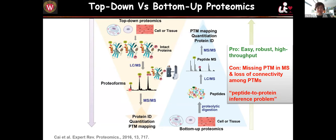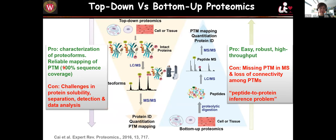In top-down, we analyze all proteins directly in the mass spectrometer with very high mass accuracy. For protein identification, we do tandem mass spectrometry — like DNA sequencing, you can sequence each amino acid to find the protein ID. You can also do quantitation and PTM mapping. This is a much more reliable way to map post-translational modifications because you have essentially 100% sequence coverage. The technology is still evolving due to challenges in protein solubility, separation, detection, and data analysis. In our lab, we recognize the strengths of both approaches and try to integrate them to address cardiac biological questions.